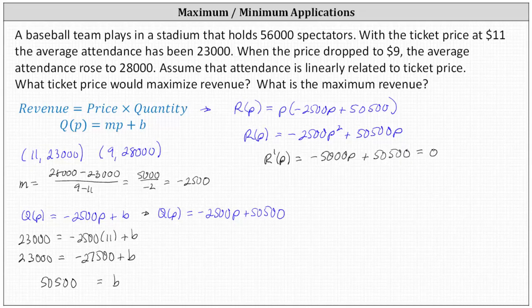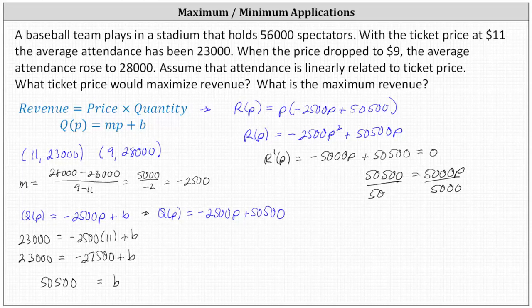Setting it equal to zero and solving for P, we have a simple linear equation. Adding 5,000P to both sides gives us 50,500 equals 5,000P. Dividing both sides by 5,000, we have P equals 10.1, which represents $10.10. We should verify this is the value of P that maximizes the revenue, not minimizes it, by applying the second derivative test and making sure the revenue function is concave down at this value of P.